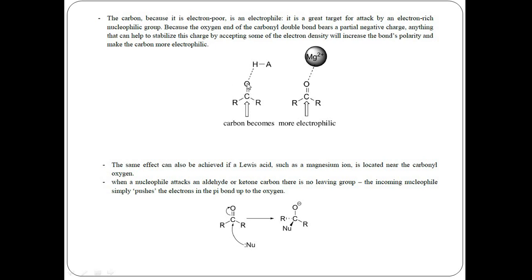This bond is polar in nature due to poor electron density towards the carbon atom, making it more electrophilic — so any nucleophilic attack will easily happen towards this electrophilic carbon atom. The same effect can also be achieved if a Lewis acid such as magnesium ion is located near the carbonyl oxygen atom. When a nucleophile attacks the aldehyde or ketone carbon atom, there is no leaving group — the incoming nucleophile simply pushes all the electrons in the pi bond up to the oxygen.